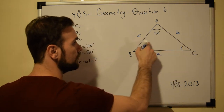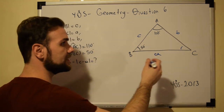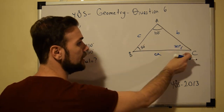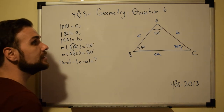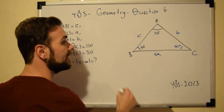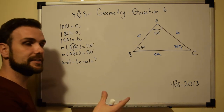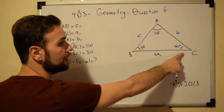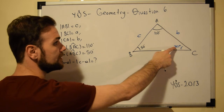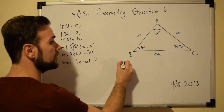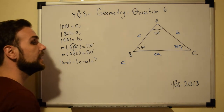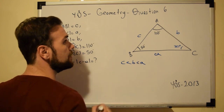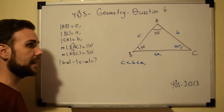First, let's find angle C. Since 50 + 110 = 160, angle C = 180 - 160 = 20 degrees. The angles reflect the lengths of their opposite sides, so the shortest side corresponds to the smallest angle. Angle C is 20 degrees, so side c is the shortest. Side b is the second shortest, and side a is the largest.